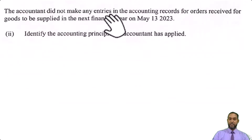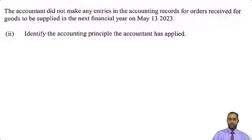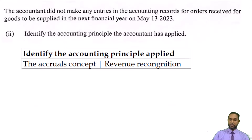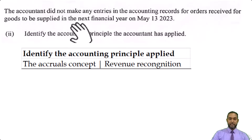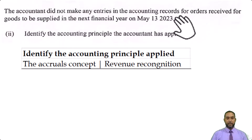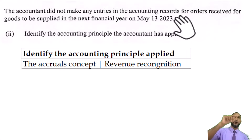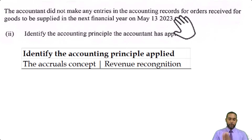The last part: the accountant did not make any entries in the accounting records for orders received for goods to be supplied in the next financial year — May 13th, 2023. The accounting principle applied here is the accruals concept or revenue recognition principle. The accountant didn't recognize the orders because the goods are to be supplied in the next financial year, meaning we won't earn that revenue until next year. There was no payment involved — we just received an order for next year. Revenue is recognized when it is earned, and the accruals concept says revenue should be recognized in the period in which it is earned.